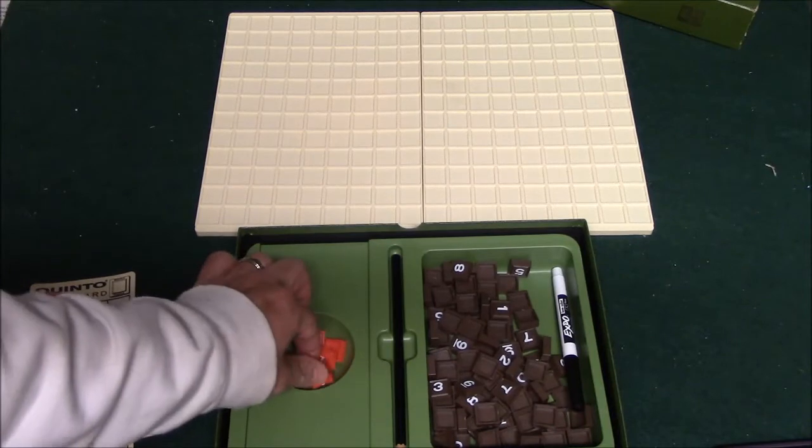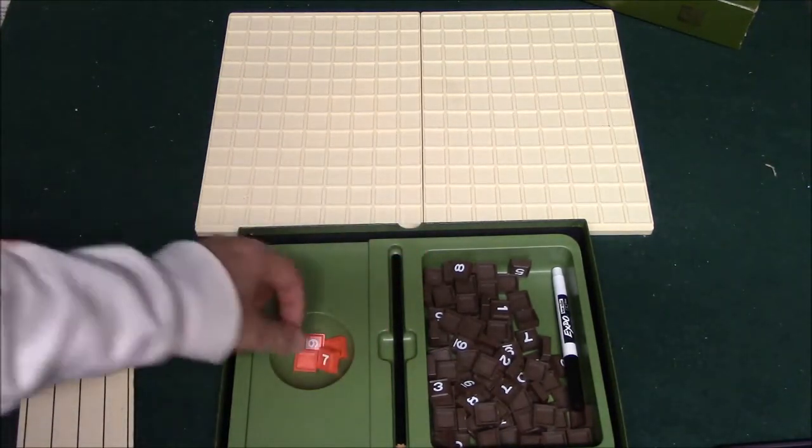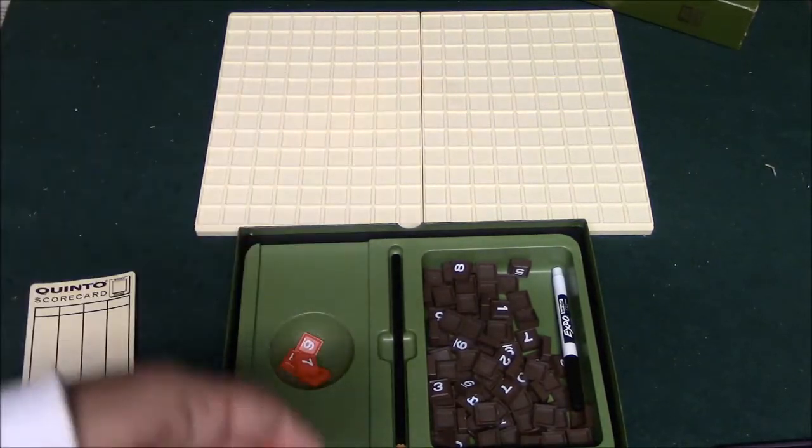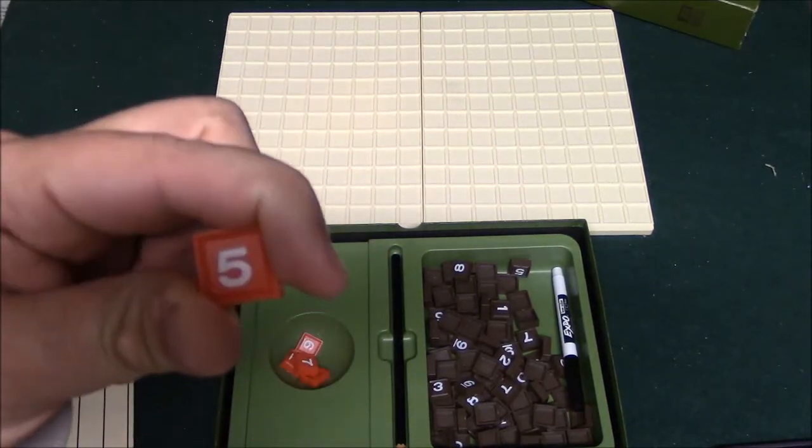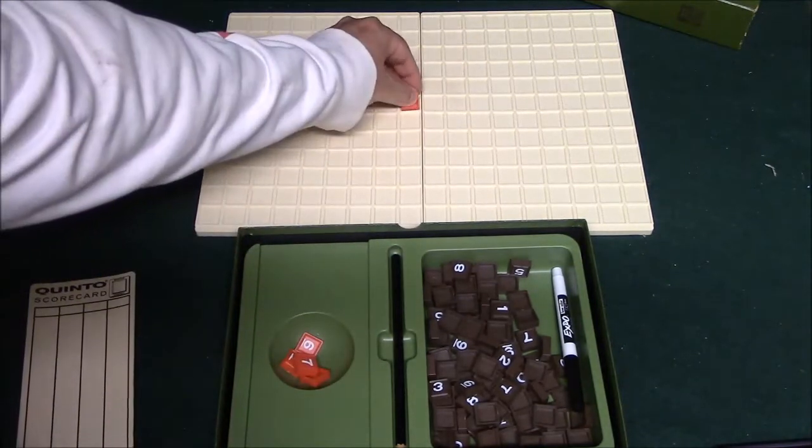Underneath here you have what are called your multiles. In a typical game you're going to use the number five, but there are other tiles here that you can use if you decide to. So in this case, I'm going to choose the five as what is called the multile, and I'm going to simply place it here in the middle of the board.